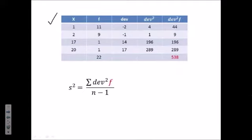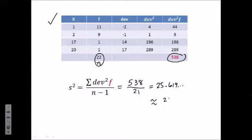Here's the table we just produced. Now we're going to substitute numbers into the formula for the sample variance. On top, we need the sum of the squared deviations times F, which is 538. And on the bottom, we need N minus 1. Well, N is 22, so N minus 1 would be 21. If we divide these, we get 25.619 and so on, which is approximately 25.62. And that would be our sample variance.